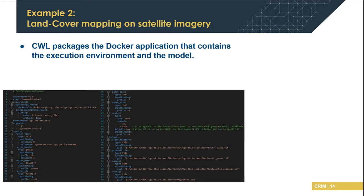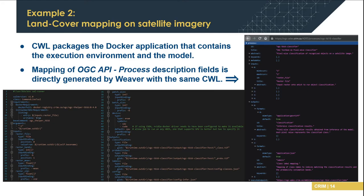For CWL, the Docker application is referenced with the Docker requirement, which contains the whole model definition and environment for execution. The input parameters can simply be provided with standard CWL execution. The whole CWL definition is directly sent to the API endpoint where Weaver is located, and automatically Weaver understands that CWL definition and generates the corresponding OGC API process description with automatic mapping of all fields, metadata, documentation details on how to execute the process, which are the inputs, which are the outputs, and how to retrieve them.